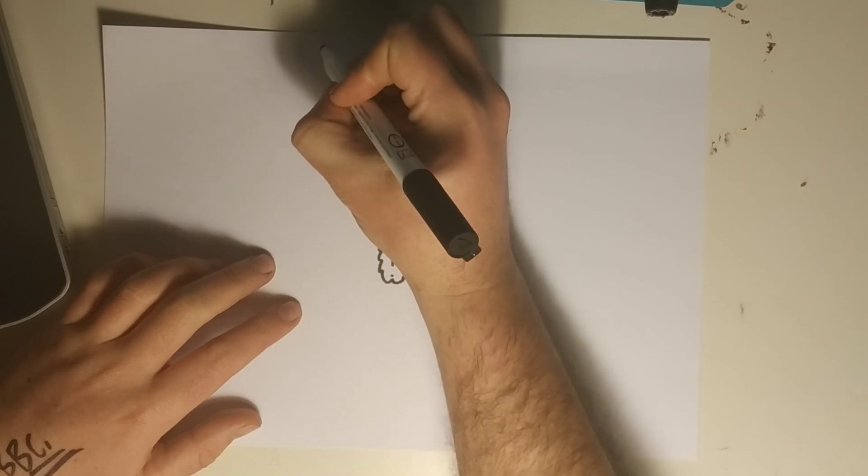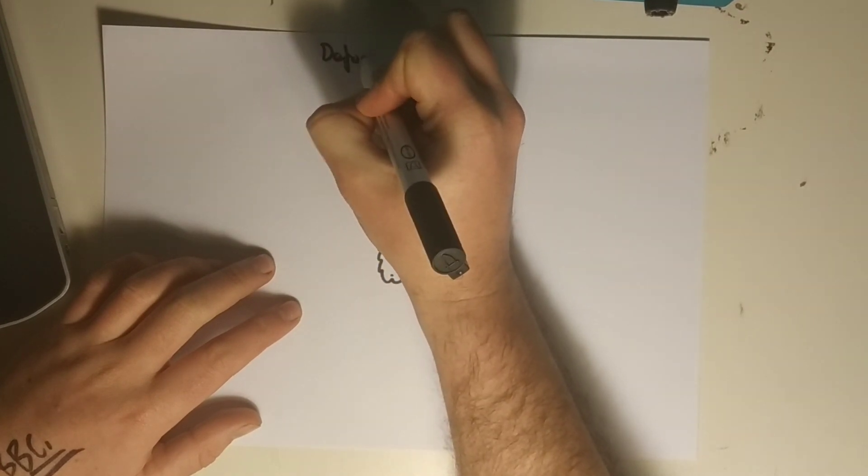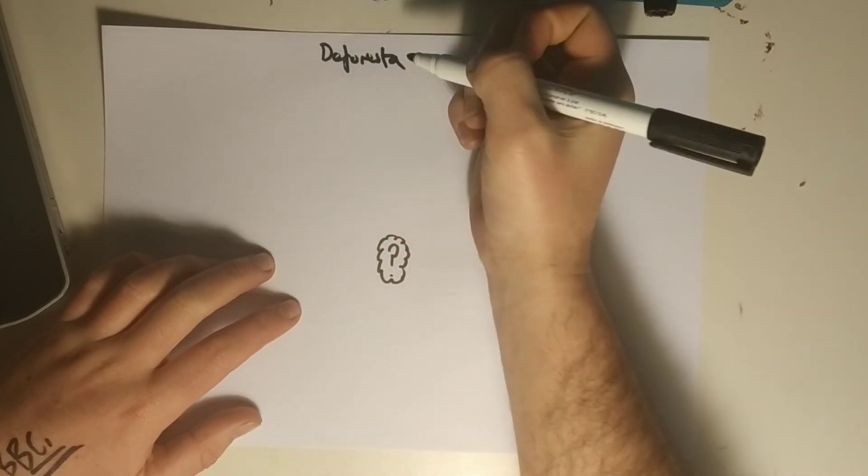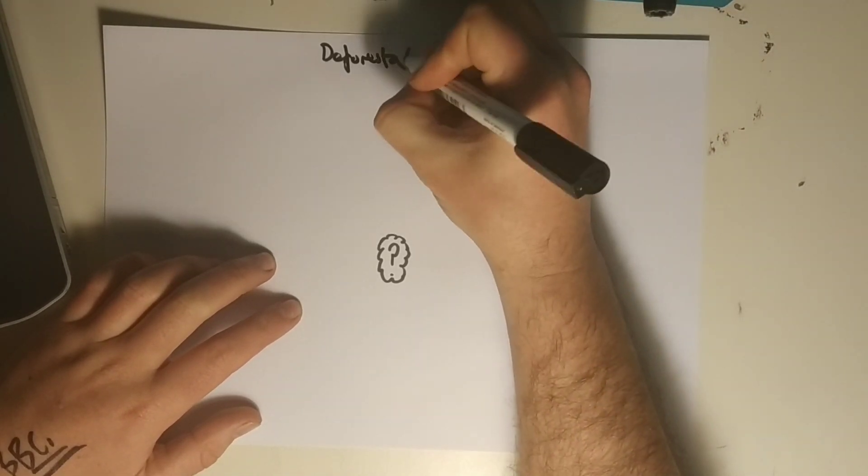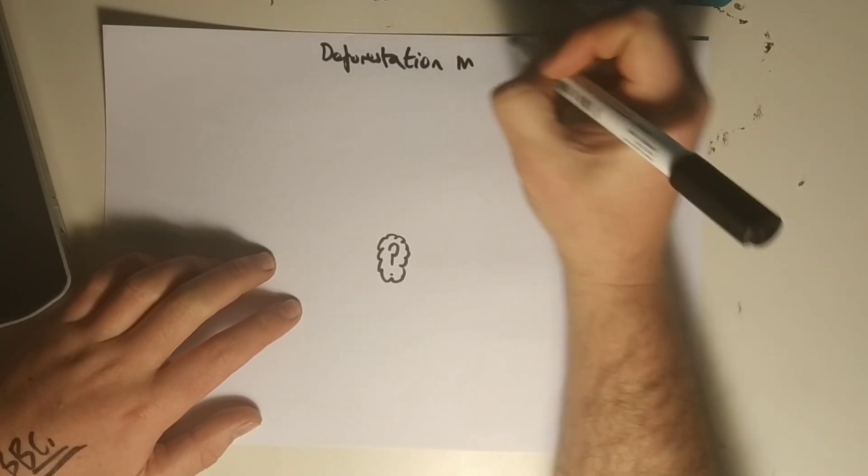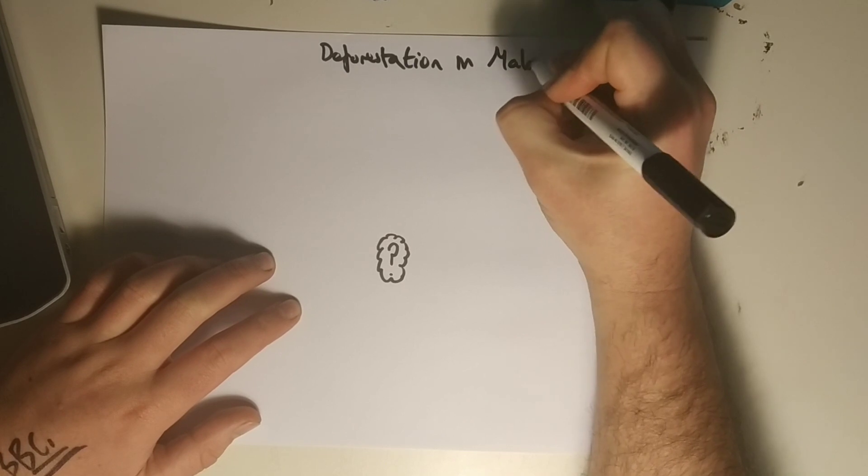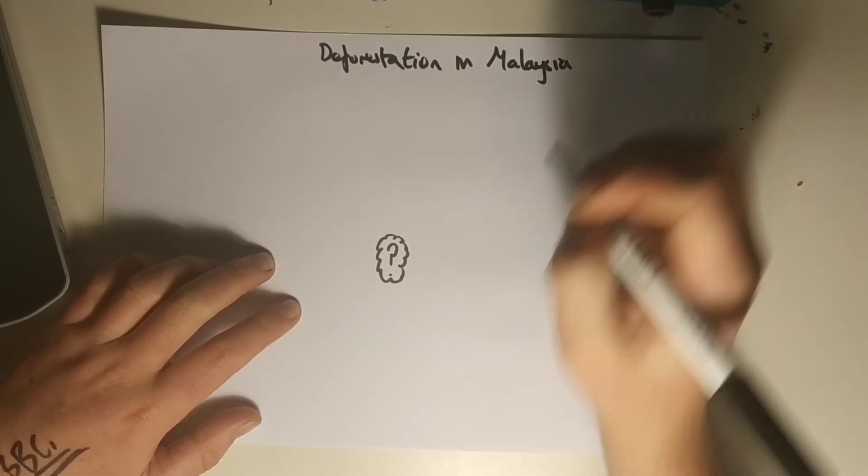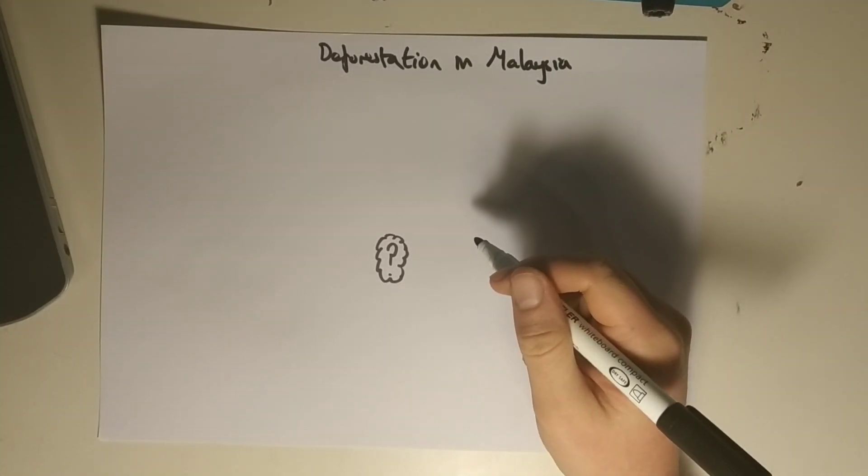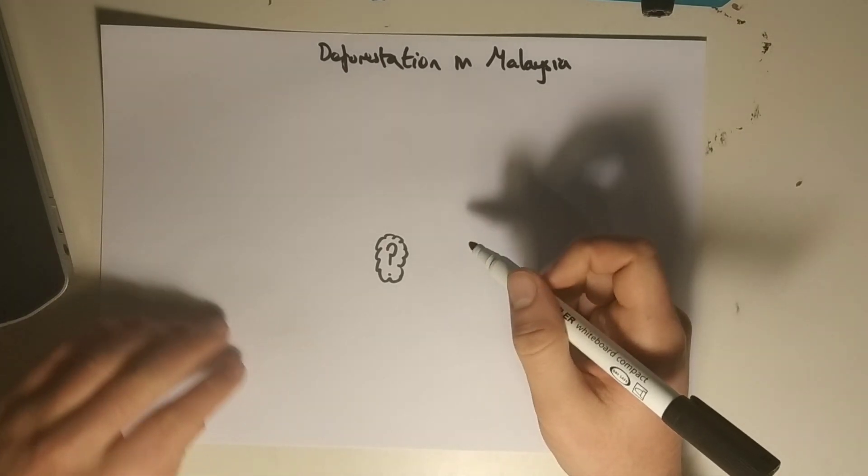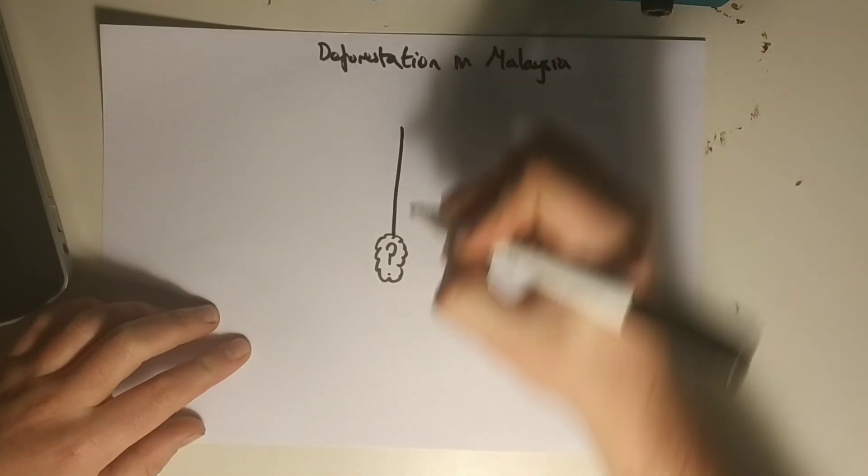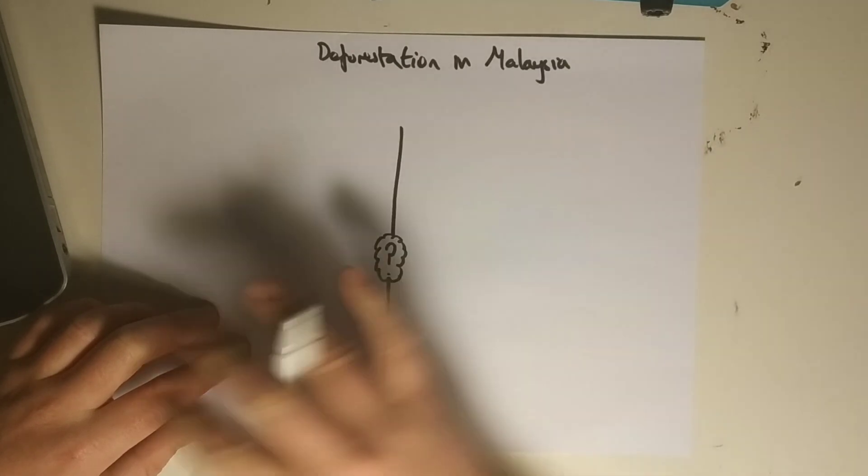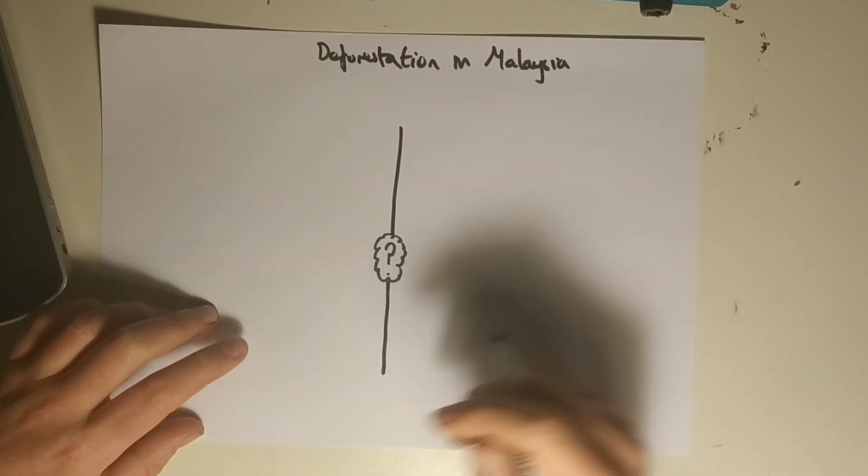But let's just start off with deforestation. Let's make sure you're getting that deforestation in Malaysia. This is our main case study that you have in your case study booklets. What I'm going to do is make it nice and simple and just separate it out into two sides of the page: positives and negatives.